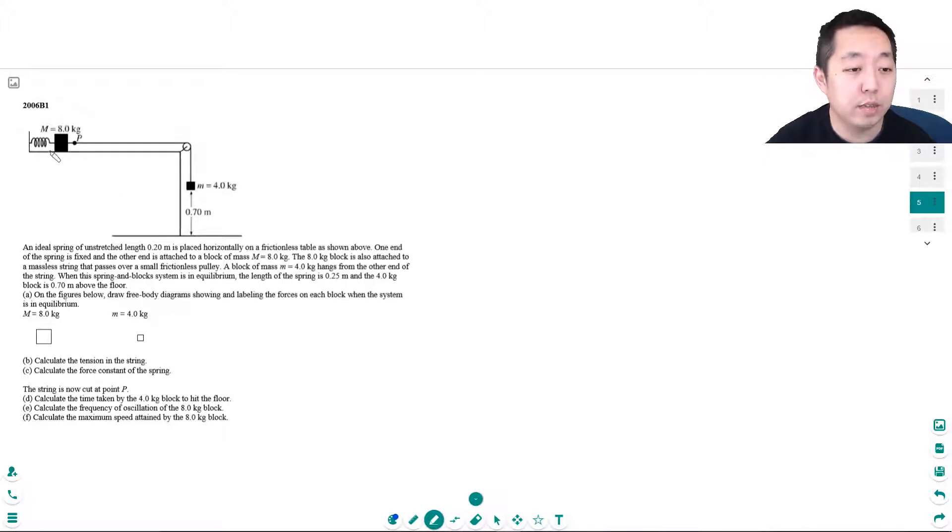So we have an ideal spring of unstretched length 0.2 meters placed horizontally on a frictionless table. One end of the spring is fixed and the other end is attached to a block of mass m = 8 kilograms.